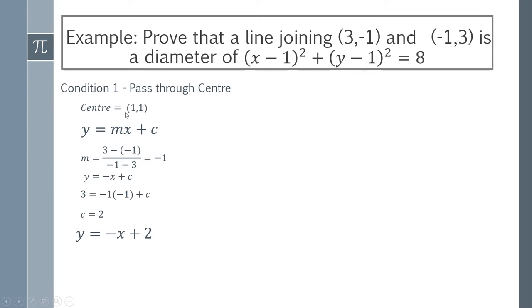We said that the center of the circle is (1,1) and we don't know whether this is on the line or not. So we need to take the center of the circle and substitute it in there. So we're going to check (1,1), this point which is our center, in this equation. So we do the substitution and we find that 1 = -1 + 2. Well that's obviously correct. So therefore we have satisfied condition 1.